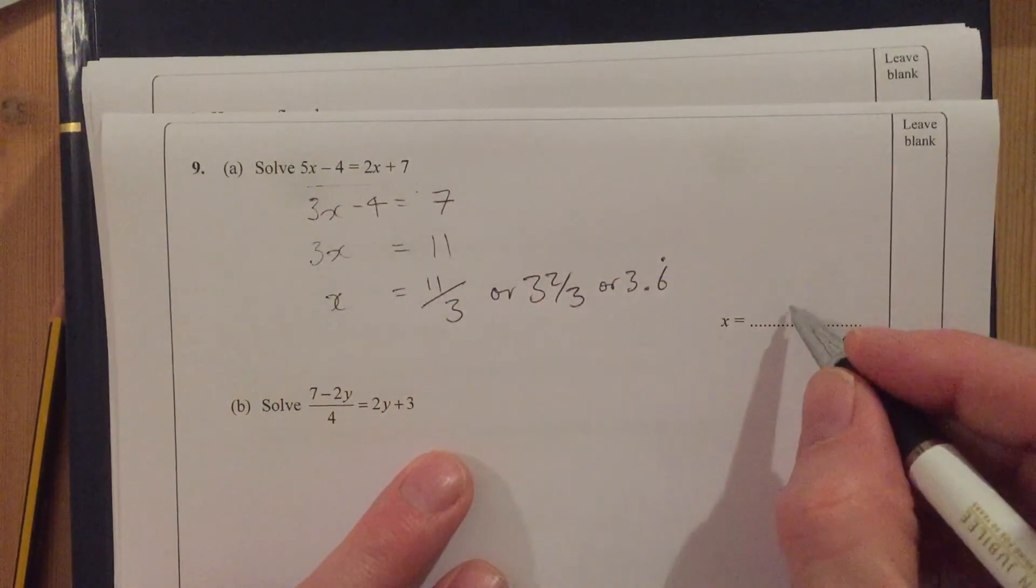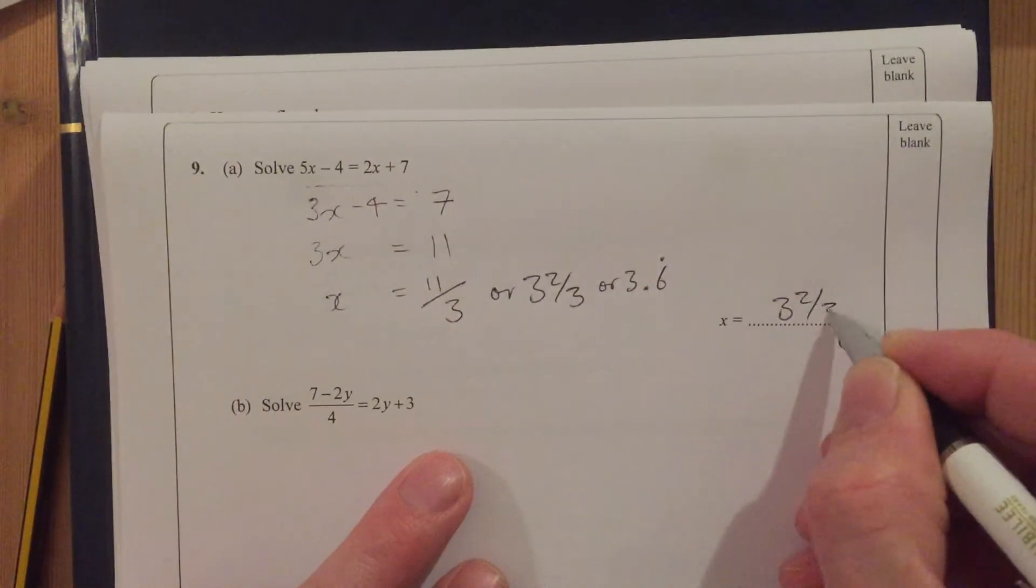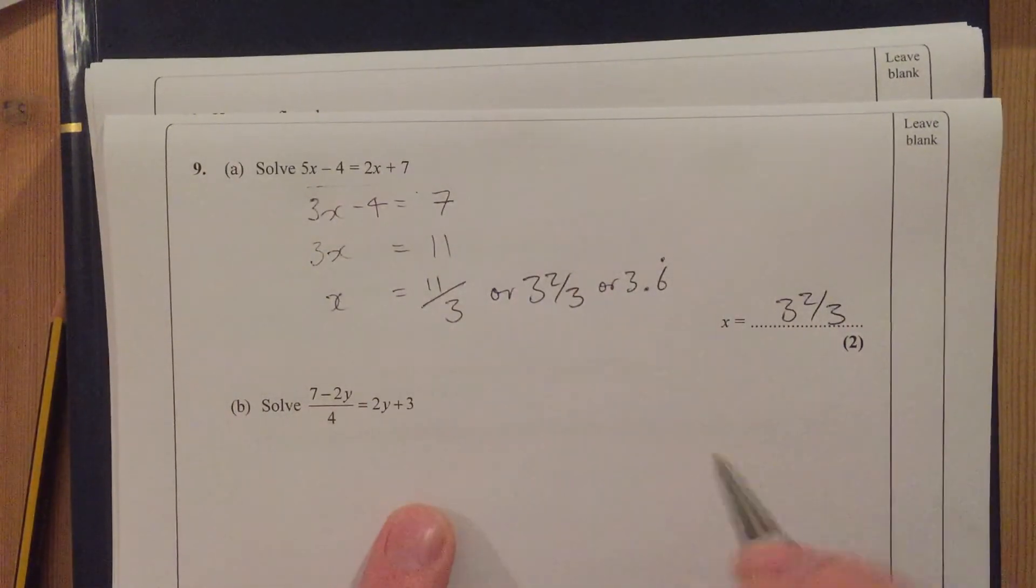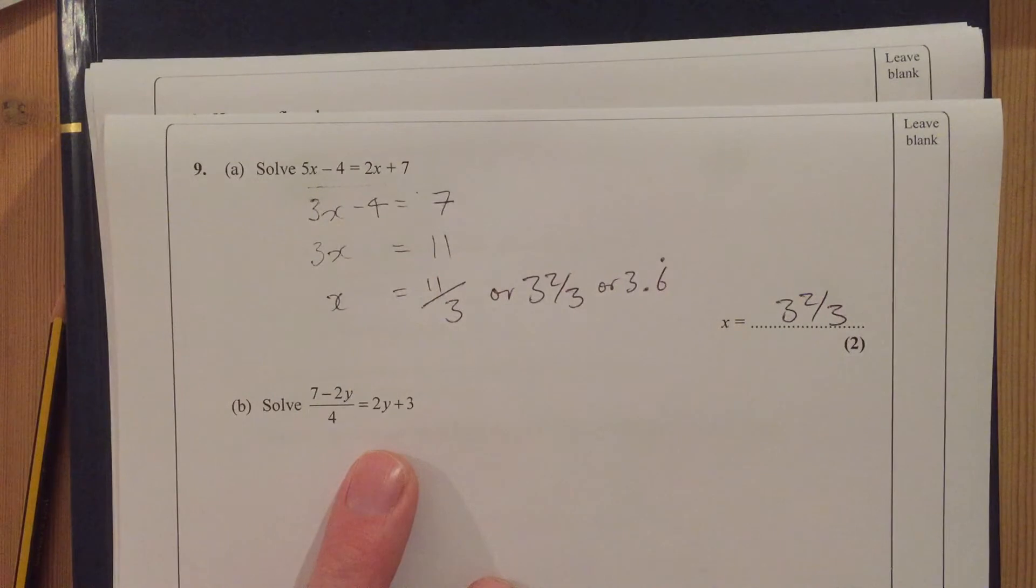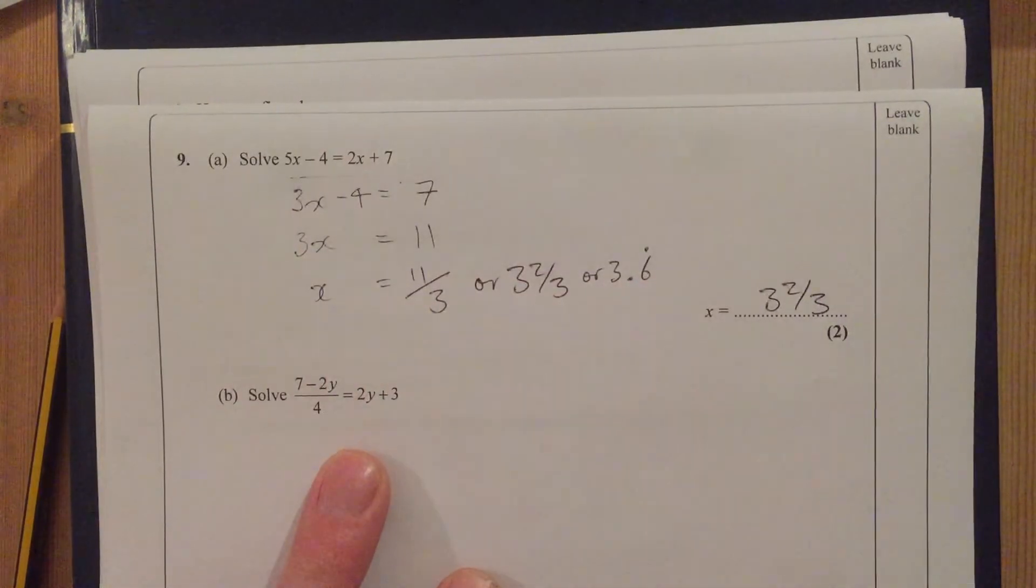Okay, but 11 over 3 is fine. 3 and two-thirds fractions is slightly better, slightly more accurate, more useful. But any of those answers is fine.